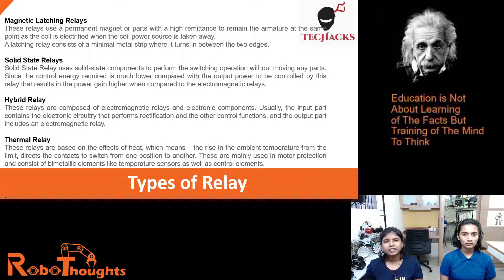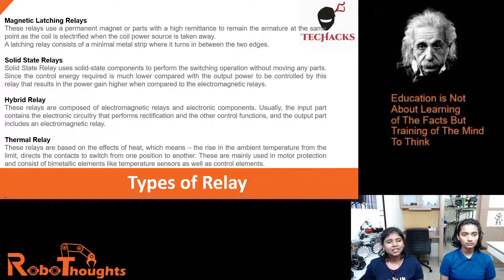Magnetic latching relays use a permanent magnet or parts with high remanence to retain the armature at the same position when the coil is energized, even when the coil power source is removed. A latching relay consists of a minimal metal strip that turns between two edges.